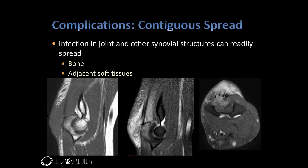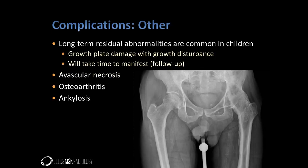Finishing up, we should highlight complications of infection of joints and other synovial structures. The first is that infection may spread from the synovial-lined structure into adjacent structures such as bone. In this case of staphylococcal infection of the olecranon bursa acquired through a penetrating injury, the infection has spread to involve the triceps tendon and bone oedema is seen in the olecranon itself representing early osteomyelitis. Septic arthritis can also lead to long-term joint abnormality and deformity. In children this is particularly true, where there may be damage to the physeal growth plate. Other complications include avascular necrosis and secondary osteoarthritis, and as we've seen, some patients will end up with an ankylosed joint.